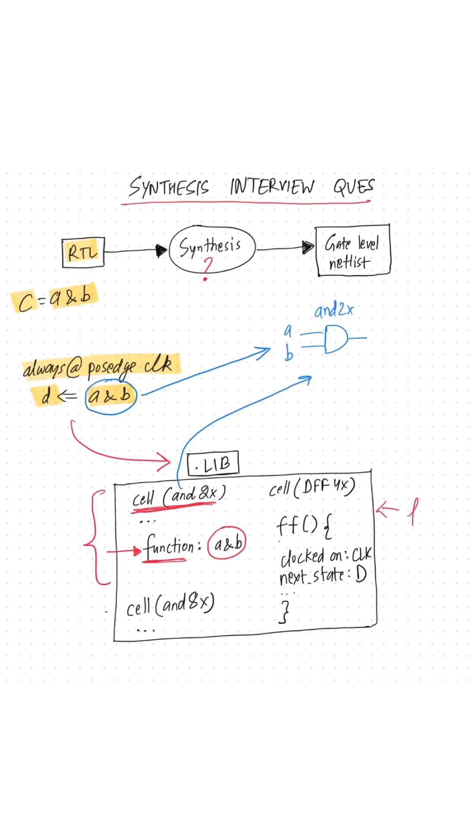For any sequential cell like a flop, the cell description in the dotlib contains a special section which starts with FF. This section has the details about that flop, like the clocks, the next state, etc.